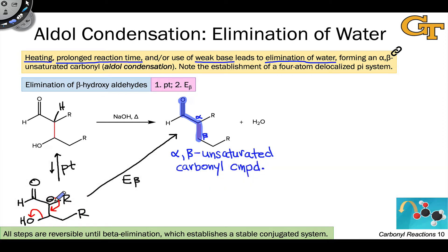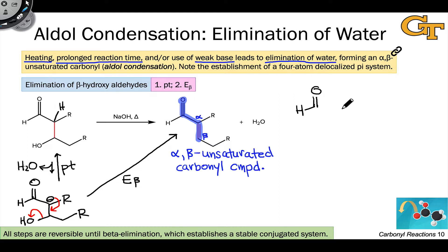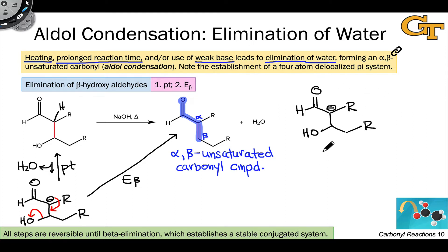You may have raised an eyebrow since we used hydroxide as a leaving group here, and we've previously talked about the fact that hydroxide is a very poor leaving group. So I do feel compelled to justify this elementary step on thermodynamic grounds — why does it work, given how much we've discussed that hydroxide is a poor nucleofuge?